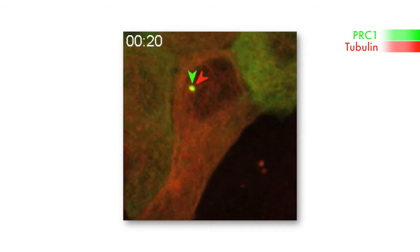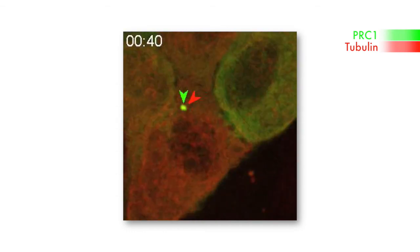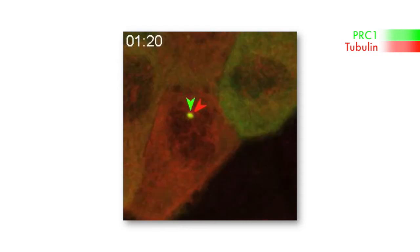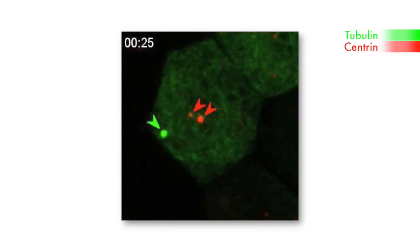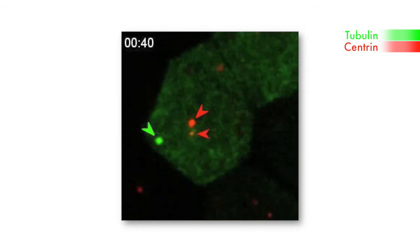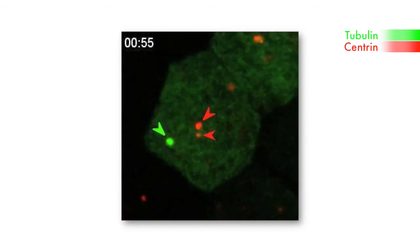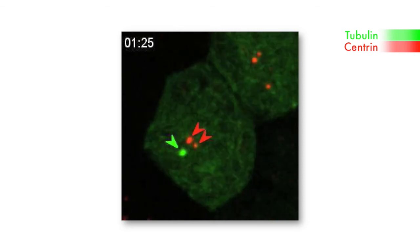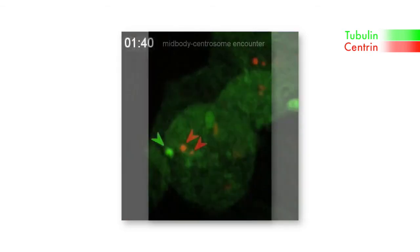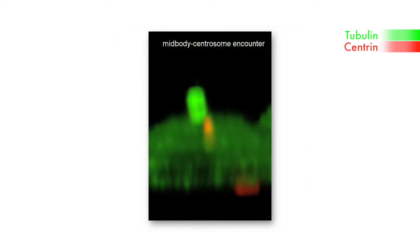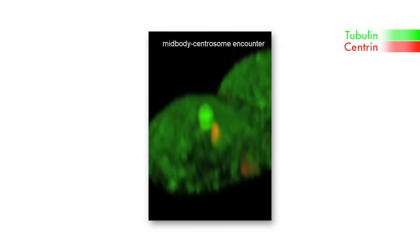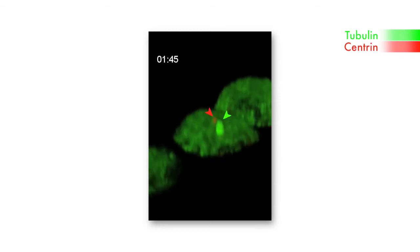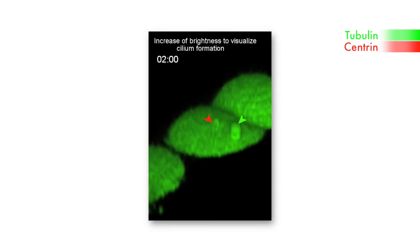The next step was to determine whether this peripheral structure then moves to become proximal to the central zone. Using video microscopy, they observed that the remnant moved to the centre of the apical surface to meet the centrosome. This movement to the centre of the apical surface depended on RAB8, and once the mid-body remnant encounters the centrosome, the cell begins to form a primary cilium.